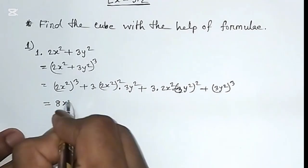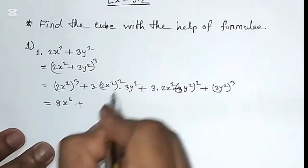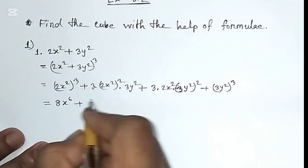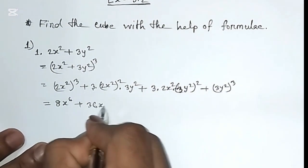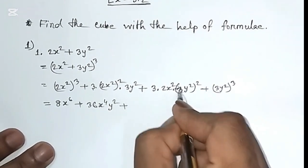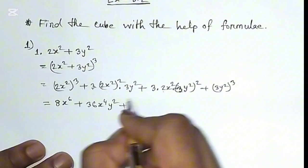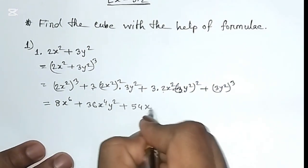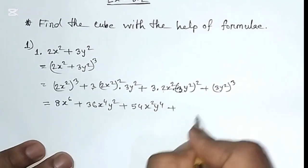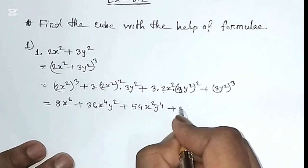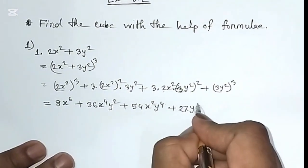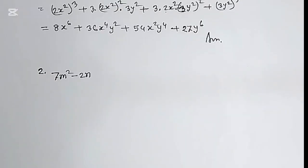x to the power 6, plus the square of 2 is 4, 4 times 3 is 12, 12 times 3 is 36. x to the power 4 times y squared, plus the square of 3 is 9, 9 times 2 is 18, 18 times 3 is 54. So x squared y to the power 4, plus cubic value of 3 is 27, y to the power 6.